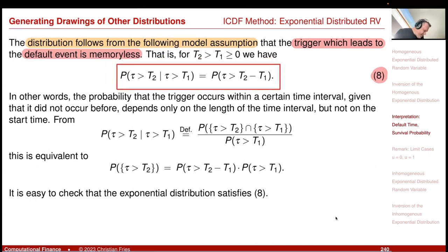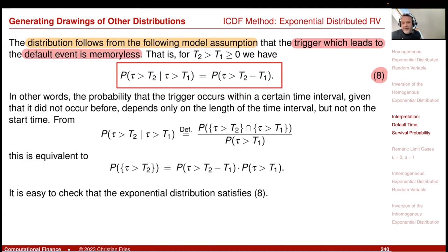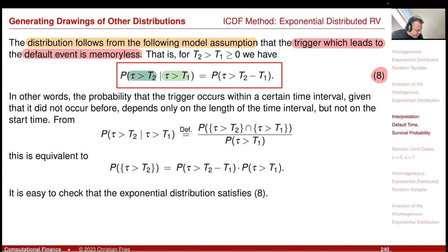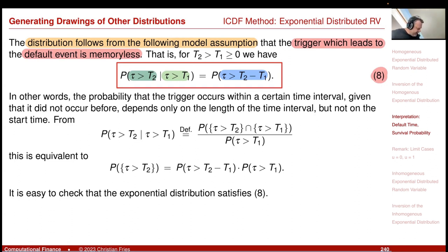The memoryless condition, call it (A), means: the probability that we survive up to time t2, conditional on having already survived up to time t1, only depends on the period length from t1 to t2. This is equal to the probability that tau is larger than t2 minus t1 — it does not matter at what absolute time we are.